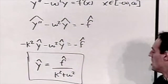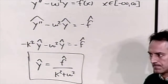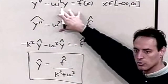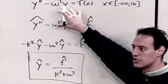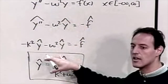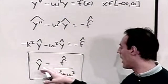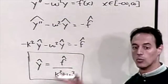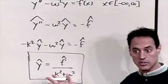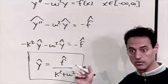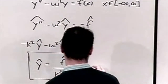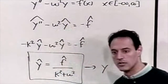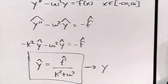Solving for ŷ: we get ŷ = f̂ / (k² + ω²). That's all the algebra required. Once we have ŷ, we just apply the inverse Fourier transform to recover y(x). So: transform the problem, solve the algebra, invert the transform — there's your solution.